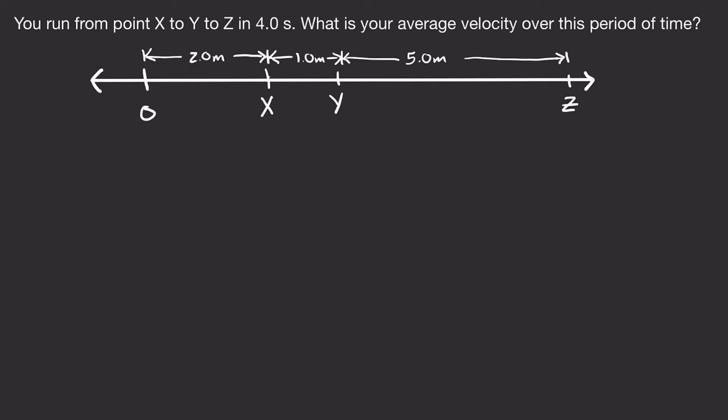In this video, we're going to solve some one-dimensional kinematics problems. We'll start with this one: you have a number line indicating your position, and it says you run from point x to point y to point z in four seconds. What is your average velocity over this period of time?